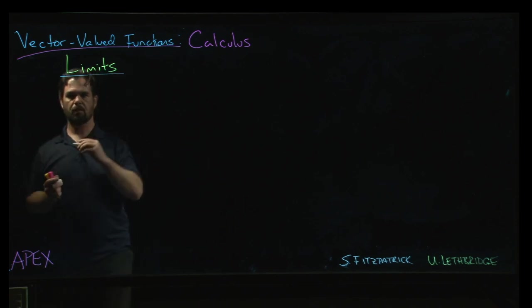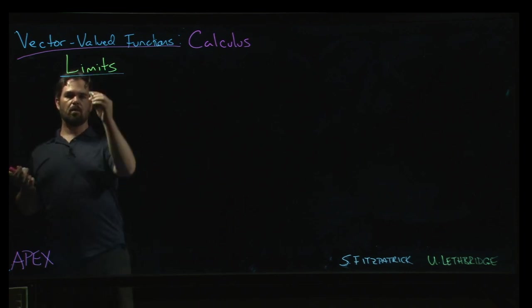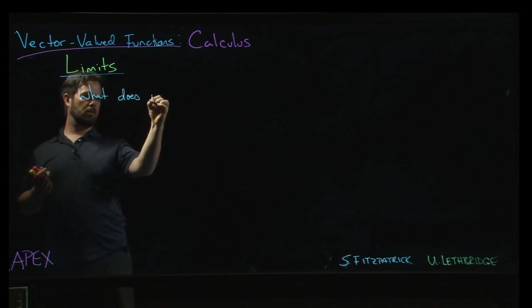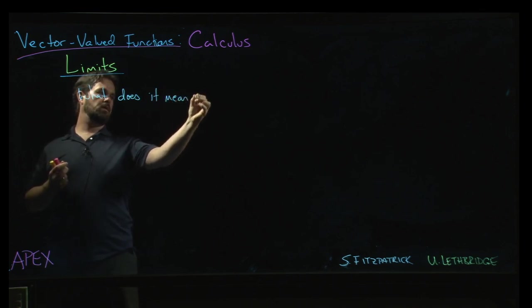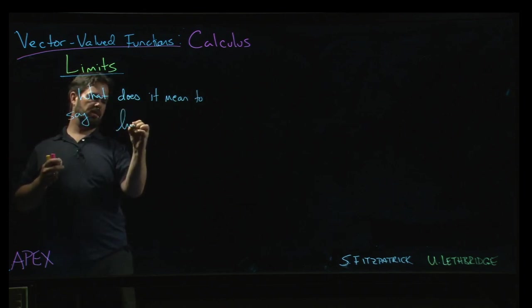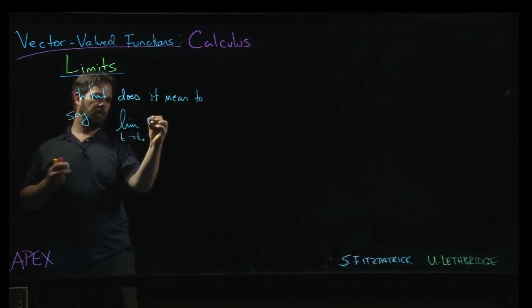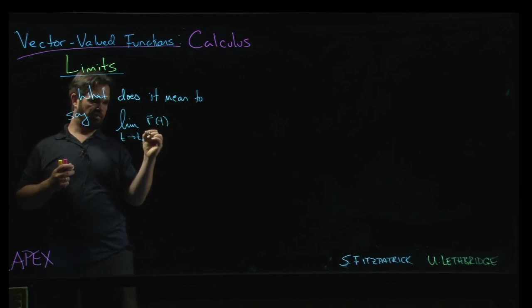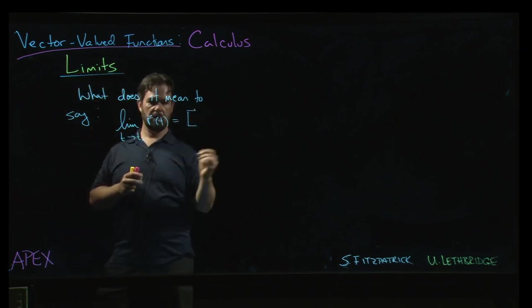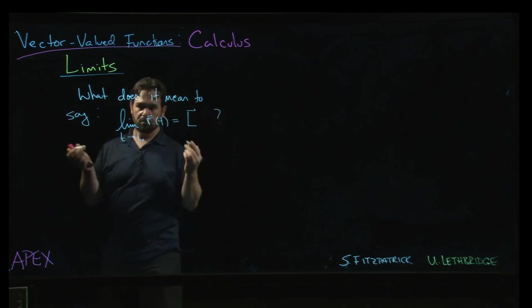Okay, so what does it mean to say or write the limit as t approaches t0 of some vector-valued function r(t) is some limiting vector value L? What does it mean?